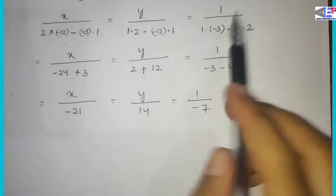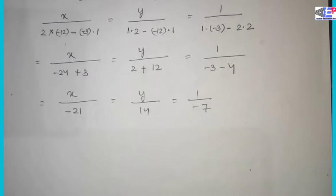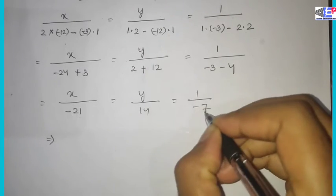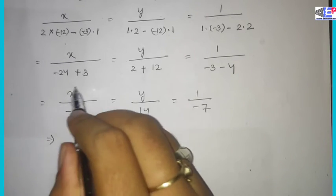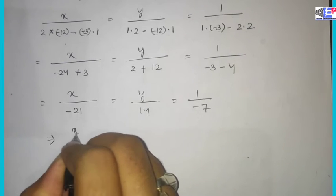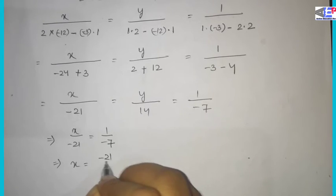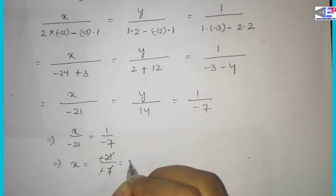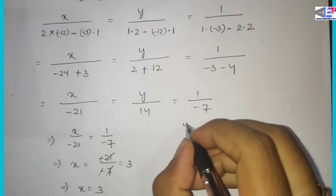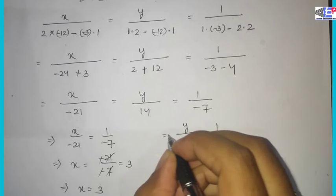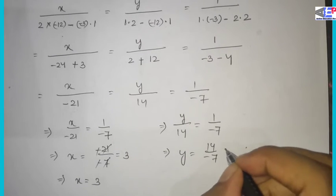Finally, we simplify. We have x by minus 21 equals y by 14 equals 1 by minus 7. Taking x: x is equal to minus 21 divided by minus 7, so x is equal to 3.